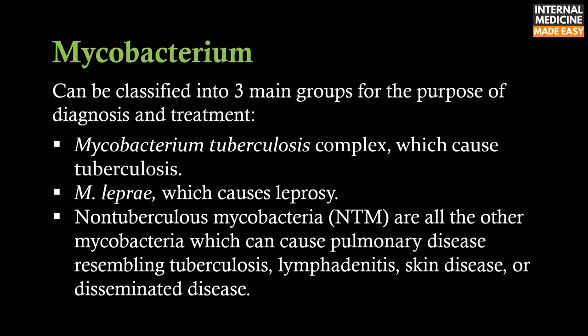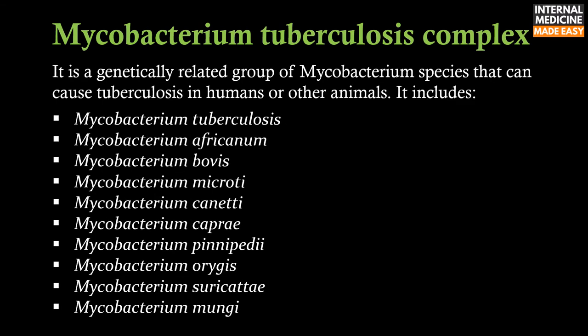NTM can cause pulmonary disease resembling tuberculosis, lymphadenitis, skin disease, or disseminated disease. Mycobacterium tuberculosis complex is a genetically related group of mycobacterium species that can cause tuberculosis in humans or other animals. It includes Mycobacterium tuberculosis, africanum, bovis, microti, canetti, capri, pinnipedii, oegis, suricati, and mungi.